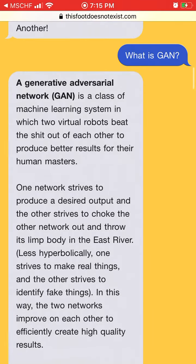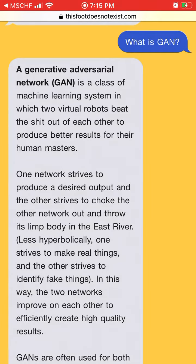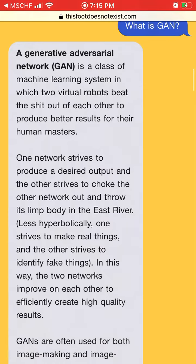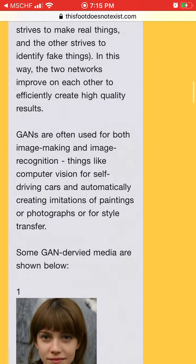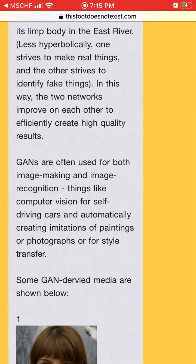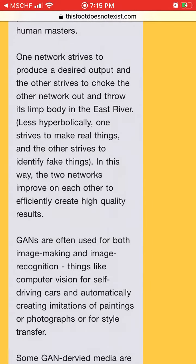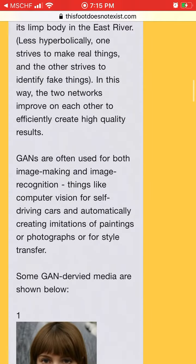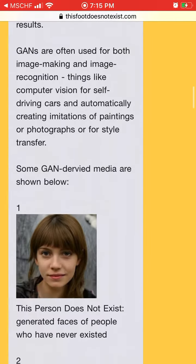It's using what's called a Generative Adversarial Network, which is basically a class of machine learning where two algorithms are competing with each other. One algorithm is creating an image of the food, and the other algorithm is trying to identify if this image is fake — so they're kind of competing with each other. And that's the idea of it.